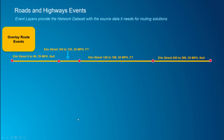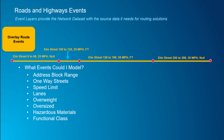What other events can I add into the Overlay Route Events tool? We mentioned address block ranges, one-ways, speed limit — you could also pull in lanes, overweight, oversized, hazardous materials, functional class, and probably others. Those are examples of events I can add in and model. Note that turn restrictions are not included here, because in Event Editor I can't have a line span two routes as an event. For the network dataset, I'll have to maintain turn restrictions separately — I'll show you how I handle that.